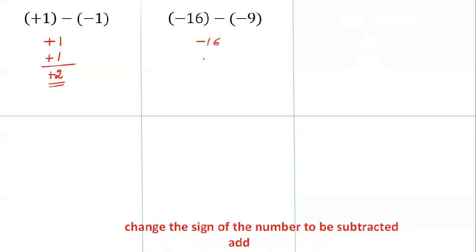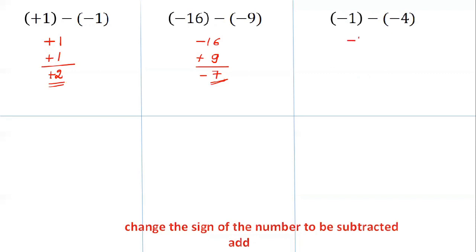Now, minus 16 minus minus 9. Write the first number as it is. Change the sign of the number to be subtracted: minus 9 becomes plus 9. Now look at their signs and decide whether to add or subtract — we subtract because the signs are different. 16 minus 9 is 7. Put the sign of the bigger number: minus 7.